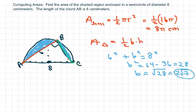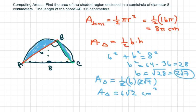Now we can use our formula. So the area of the triangle is one half the base, which is 6 times 2√7. These 2's will cancel. So the area of the triangle is 6√7 centimeters squared.